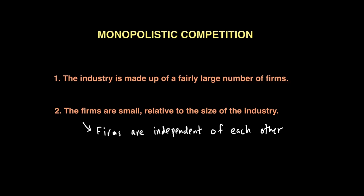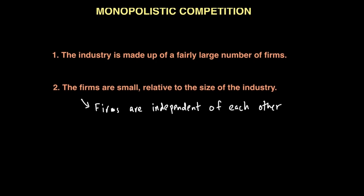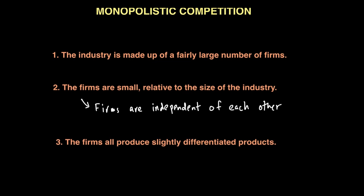In other words, firms are still acting independently. These two assumptions — that the industry is made up of a fairly large number of firms and that each firm is small relative to the market — mean this market structure has a lot more in common with perfect competition. However, the third assumption, which makes it different from perfect competition and results in a downward sloping demand curve, is the idea that firms produce slightly differentiated products, which means they are not homogeneous or identical like in perfect competition.